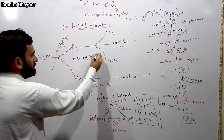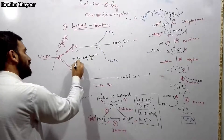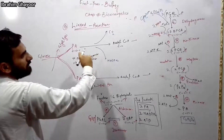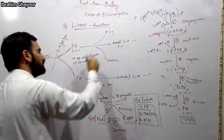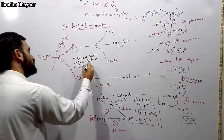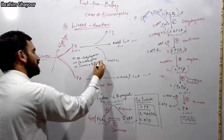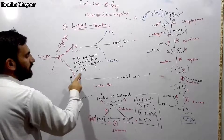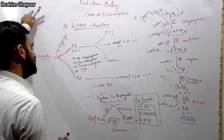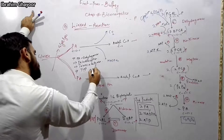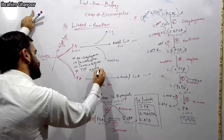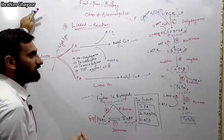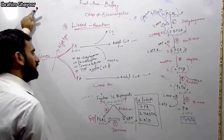The pyruvate dehydrogenase complex has multiple enzymes: pyruvic acid dehydrogenase for the dehydrogenation step, decarboxylase for removing CO2, and transacetylase for transferring the acetyl group. Cofactors include TPP — thiamine pyrophosphate, which is vitamin B1.